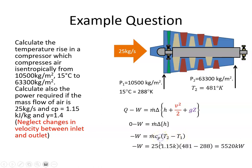cp we were given as 1.15 kilojoules per kilogram. The mass flow is 25 kilograms per second. The difference in temperature: we calculated T2 to be 481 degrees Kelvin, and the inlet temperature was 288 degrees Kelvin.